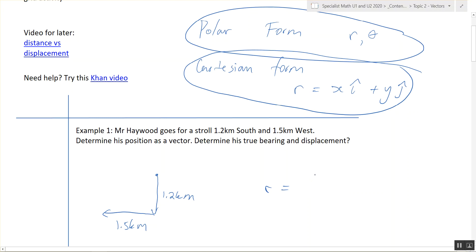So how could we represent this in Cartesian? The J's, positive J is in the positive Y axis. Positive I is in the positive X. So we've got me going negative 1.5 kilometers. It's negative because it's going left of the i-axis. And then negative 1.2 kilometers in the J because it's going down.